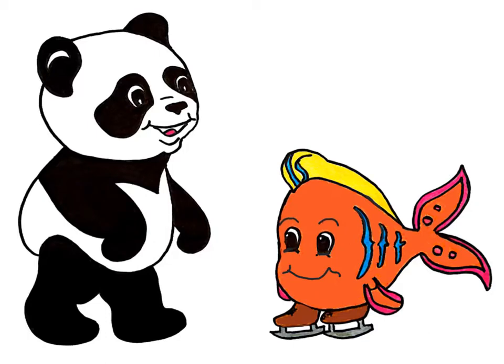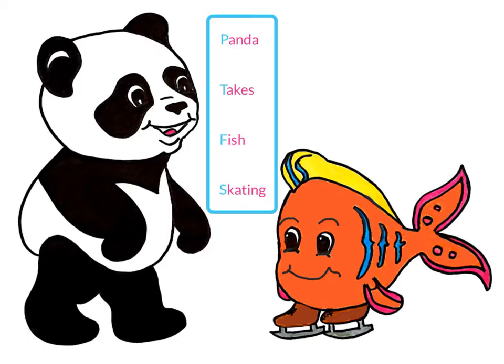We have two friends to help us remember. Panda takes fish skating. This is a mnemonic device that can help us with memory tricks — the crazier the sentence, the better. And after all, who can forget that a panda is taking a fish skating?